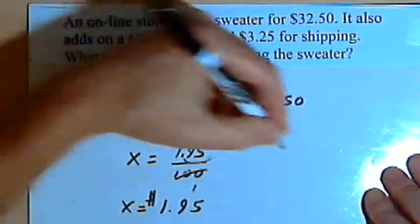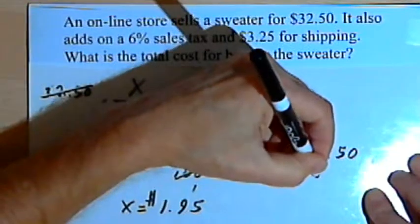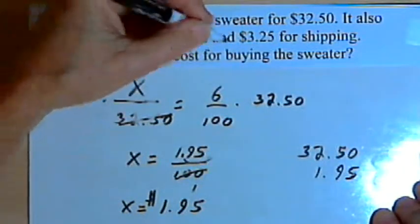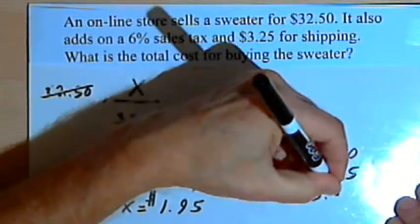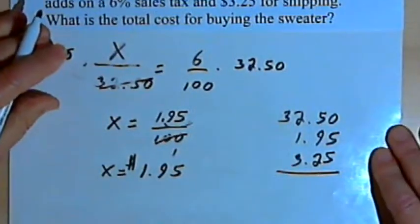Now I've got to add the cost of the sweater, $32.50, plus the sales tax, $1.95, plus the shipping cost, $3.25, and find out what the final cost is going to be.